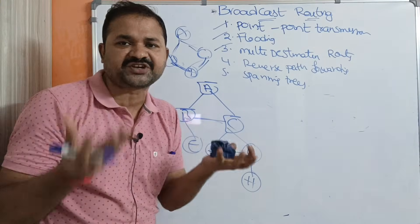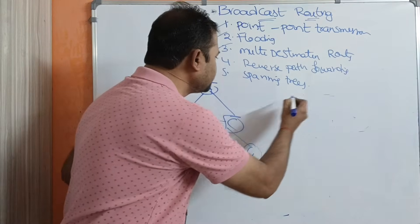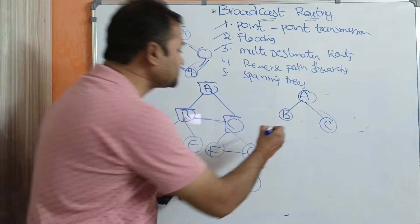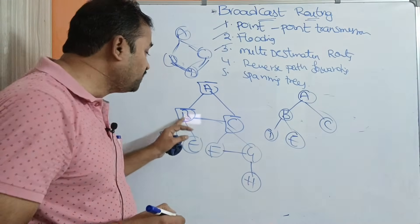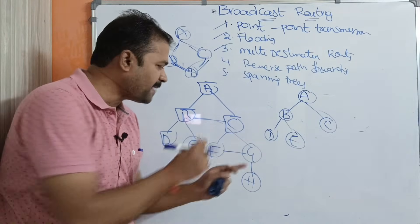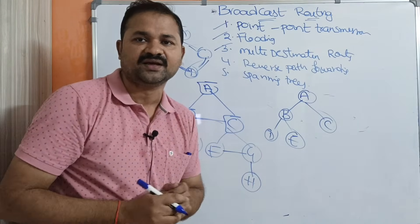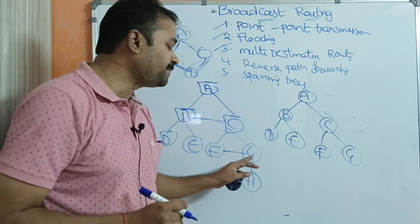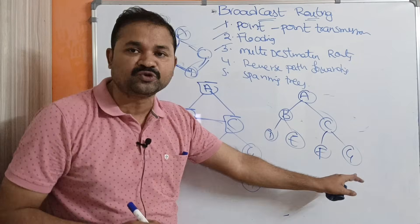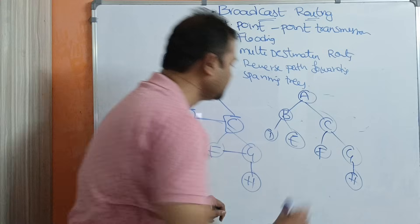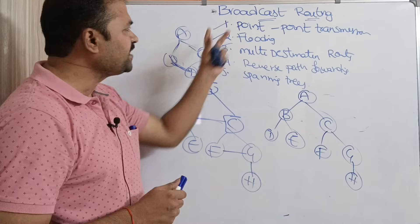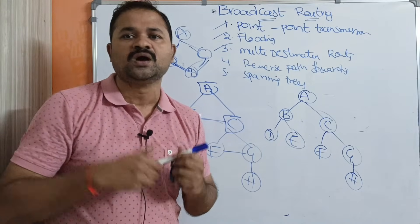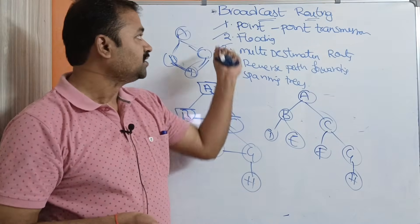Let us construct a spanning tree with source router A. Router A transmits the packet to neighboring routers B and C. Next, B transmits to D and E, but not to C — because that would form a cycle. C transmits to F and G, but F does not transmit to G as that would also form a cycle. G transmits to H. This is the spanning tree. By using these five approaches, broadcast routing is implemented — sending a packet to all or many destinations simultaneously.